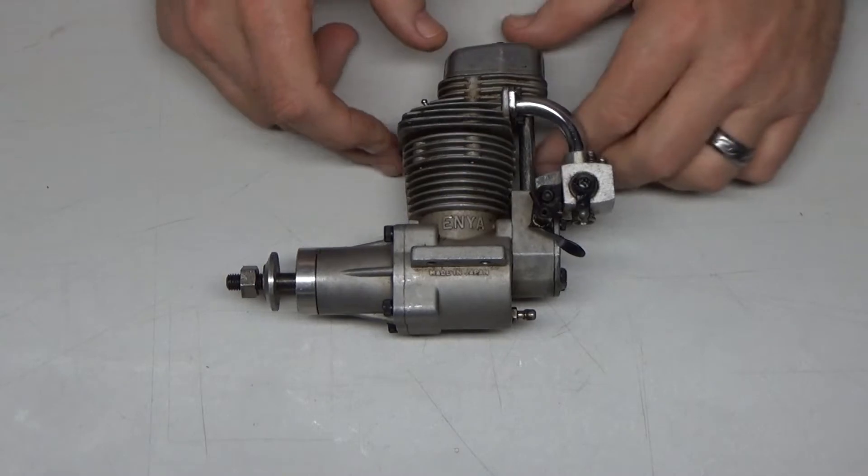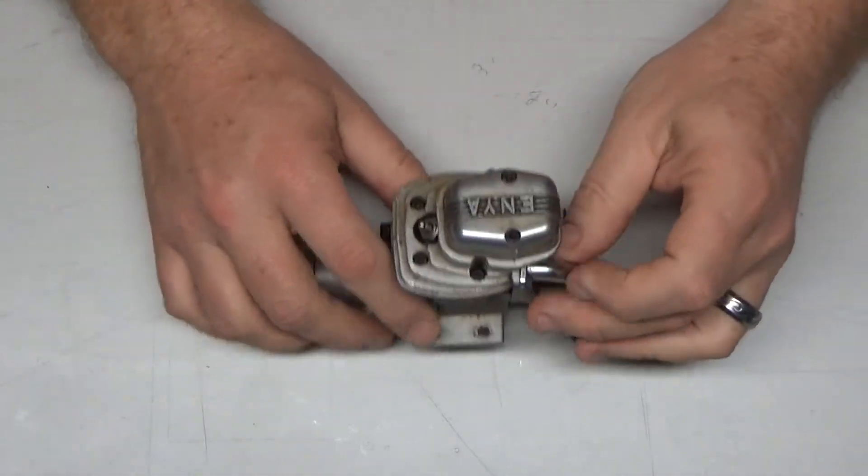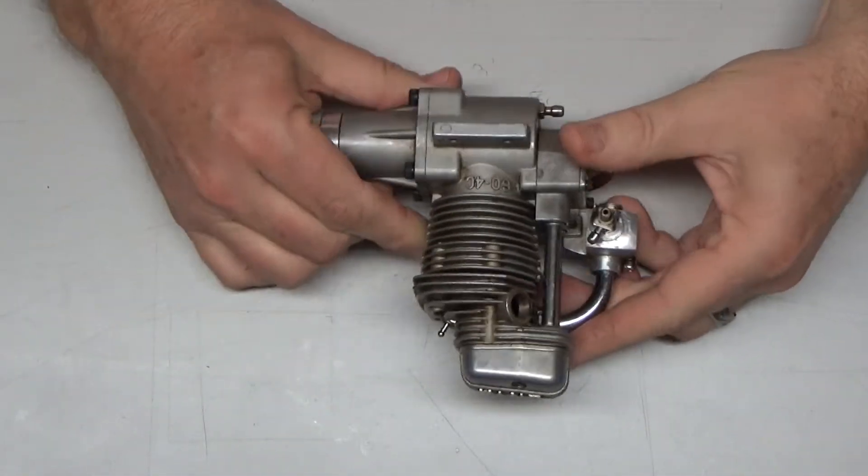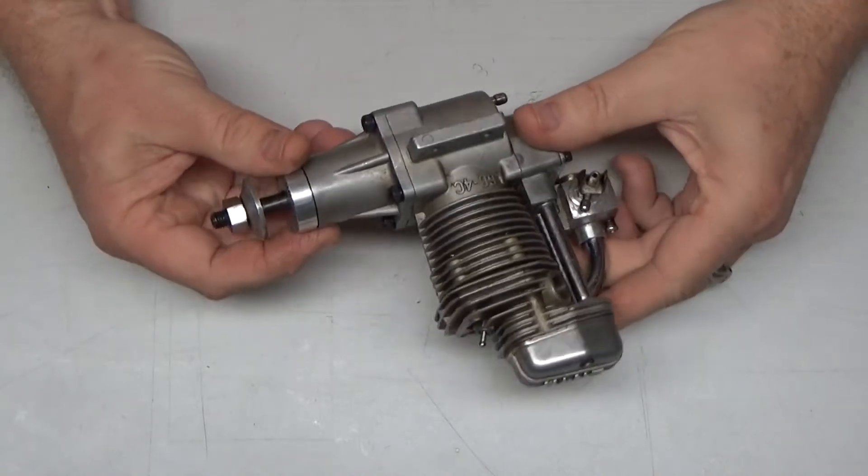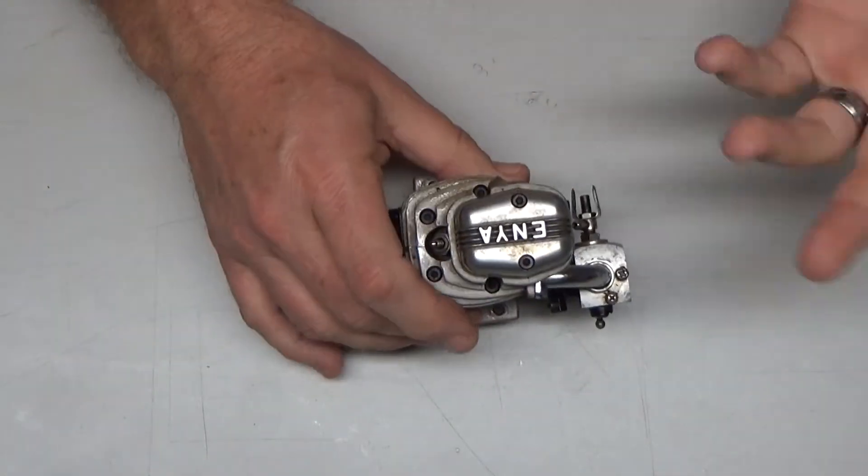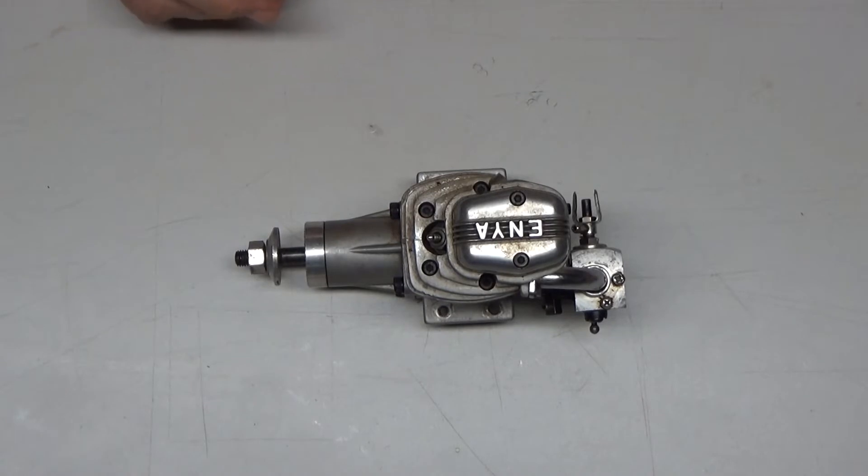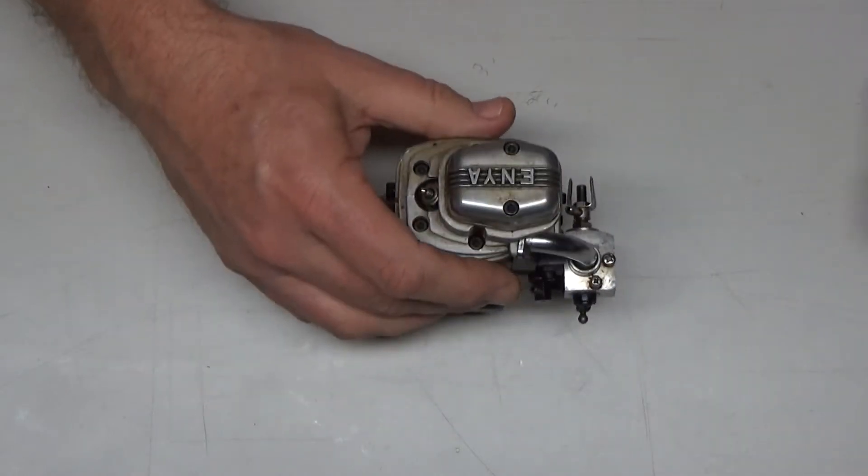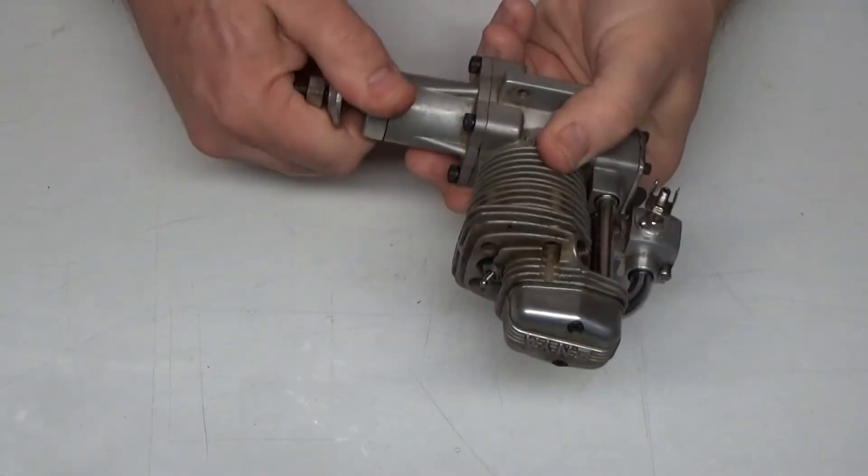Okay, so I've got the fourth of the four engines that were sent to me for service, repair, and cleaning. One of my favorite engines of all time are these Enya four-stroke engines. So this is an Enya 60. It doesn't look like it's in too bad a shape. It's a little dirty.